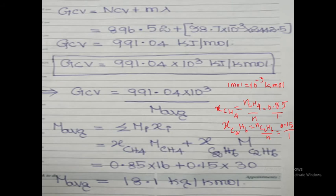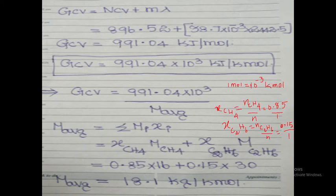The objective is to find GCV. GCV = NCV + m·λ, where NCV and m·λ values are now known. Substituting, we get GCV = 991.04 kJ/mol. Converting to kJ/kmol: since 1 mol = 10⁻³ kmol, GCV = 991.04 × 10³ kJ/kmol.